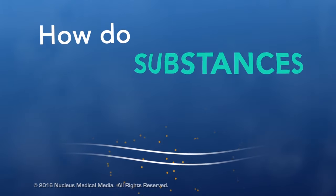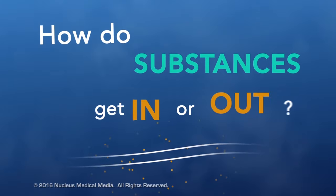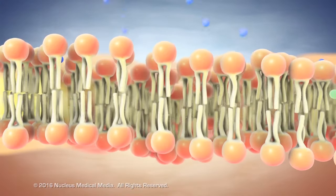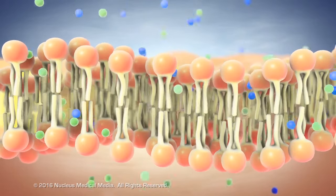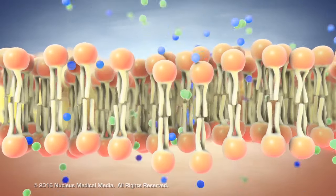But how do the majority of substances get in or out of the cell? Some molecules seep through the little spaces in between the phospholipids, which make up the majority of the semi-permeable cell membrane.